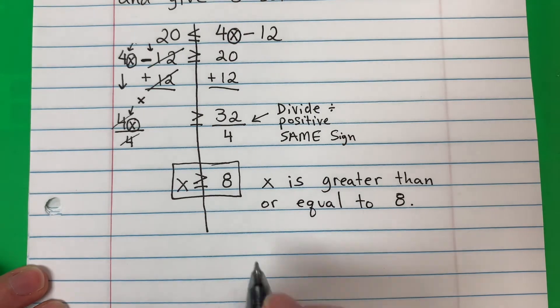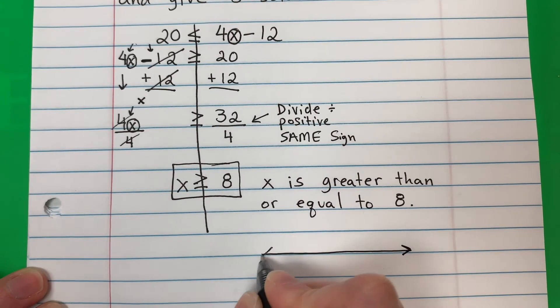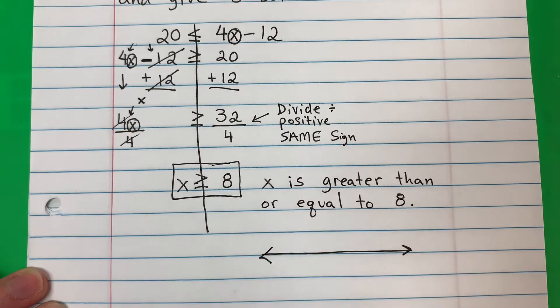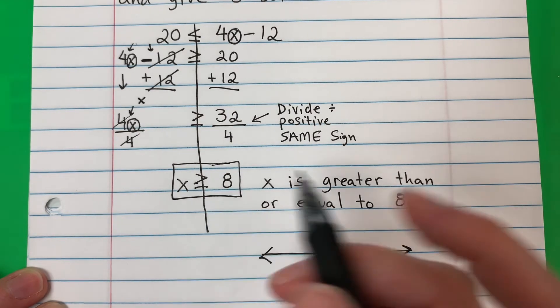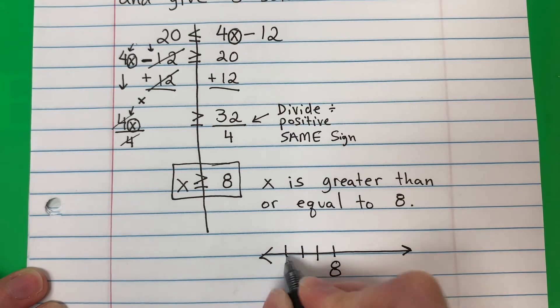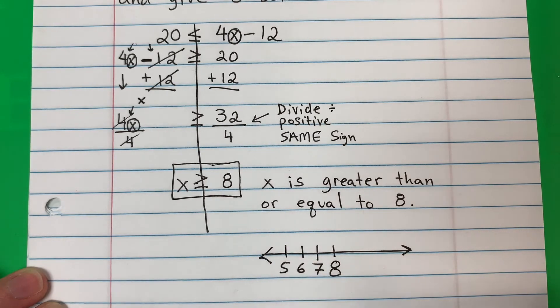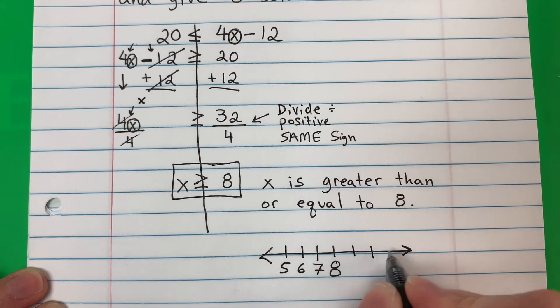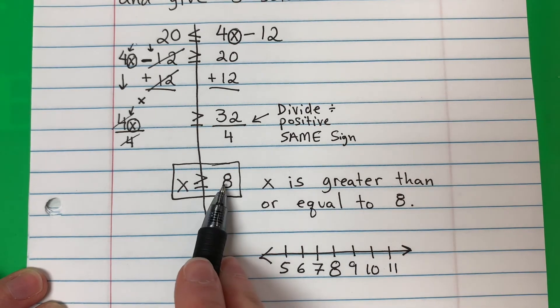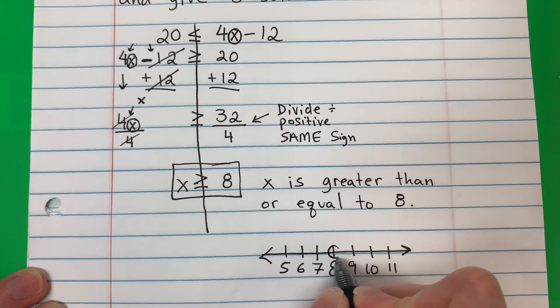Okay, let's do our graph now. So do a line. I like to put my number here in the center. So eight. What is before eight? So that is seven, six, five. And then after eight, nine, ten, eleven. Put a circle on the eight.